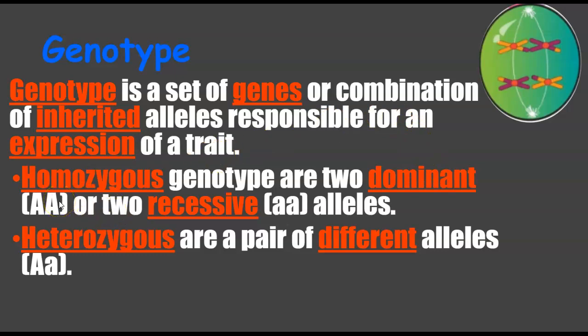Now we'll look at homozygous and heterozygous — similar to homogeneous and heterogeneous from chemistry, just with a different ending. Homo means same, hetero means different. Homozygous genotypes are the same — either two dominant alleles (capital A, capital A) or two recessive alleles (lowercase a, lowercase a). Heterozygous have different alleles — one capital, one lowercase.